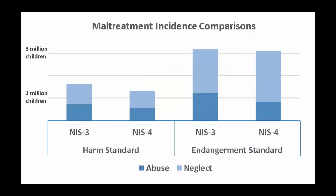The NIS-4 report to Congress published findings of an overall decrease in U.S. maltreatment incidents. 1.25 million children — 1 in 58 — were victims of harm standard maltreatment, demonstrating a decrease in maltreatment overall and in all abuse categories. This reflects a 32% decline in the U.S. child maltreatment rate since NIS-3. 3 million children — 1 in 25 — were victims of endangerment standard maltreatment, demonstrating no change in maltreatment rate overall and decreases in abuse and all abuse subtype categories.